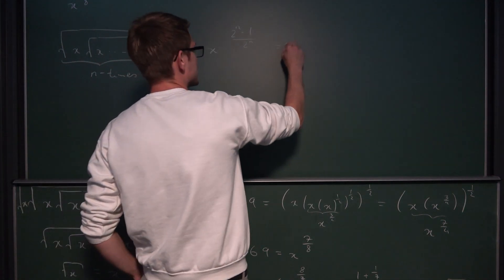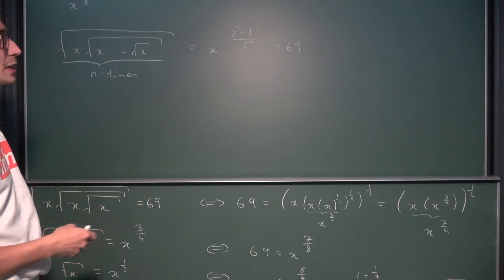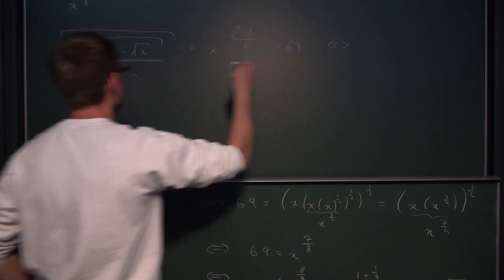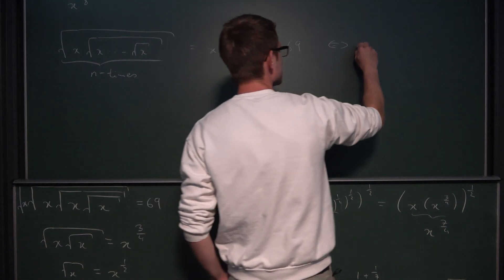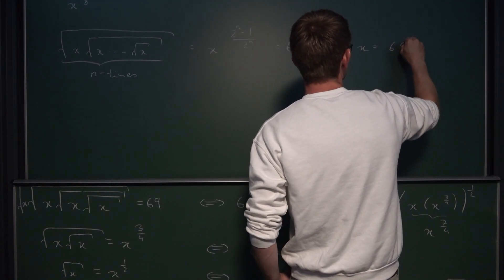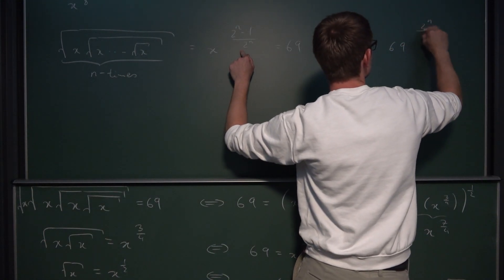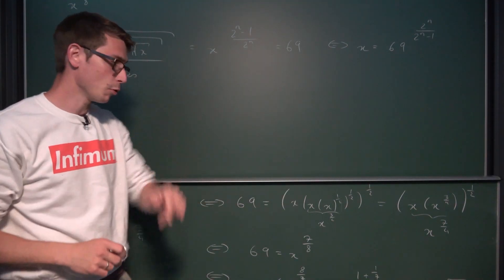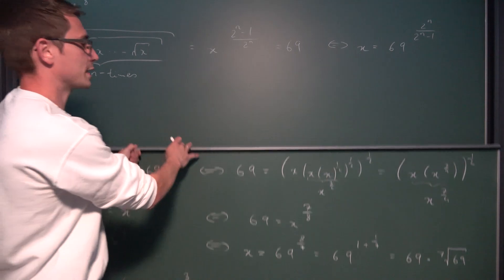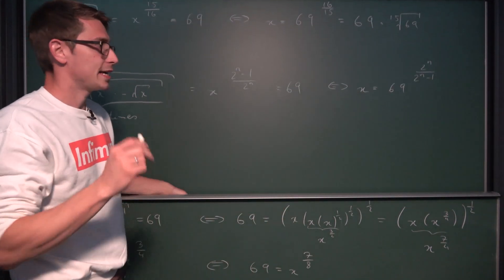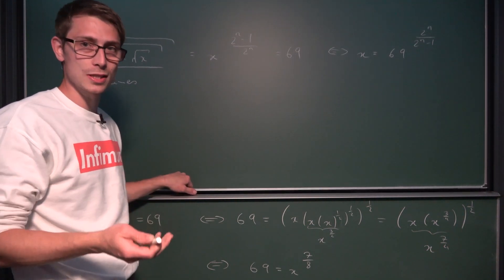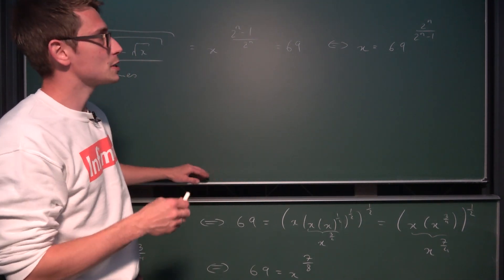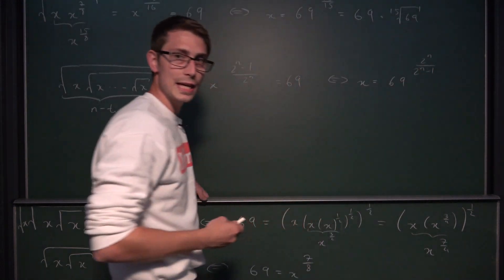And if we now set this equal to 69 and solve for x, our value for x in this abstract case is going to be 69 to the 2^n over (2^n − 1). We could leave it at that, but don't forget what we did before — we extracted the 69 term from it. Can we do the same here? Yes we can. If you notice, in this fraction we kind of have the same numerator and denominator.